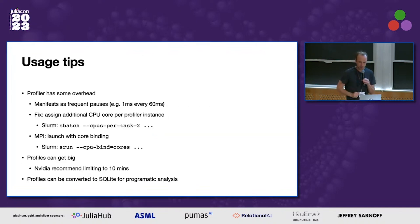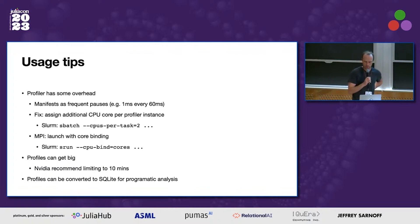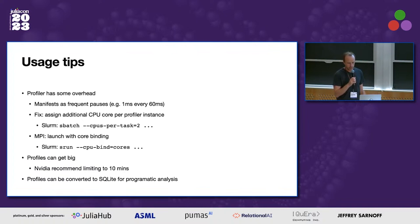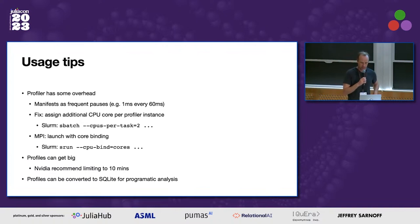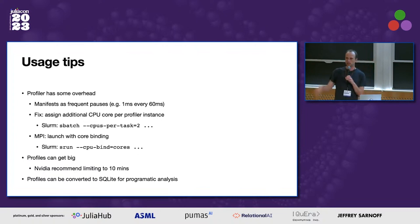Some minor usage tips. The profiler does have some overhead itself, which tends to appear as frequent pauses — about one millisecond every 60 milliseconds or so. The easy fix is to make sure you have an extra CPU core assigned for the profiler. If you're on a cluster, bind the cores to each task to ensure everything gets assigned nicely. The profiles can get very big, so don't run it for too long — NVIDIA say they only support up to 10 minutes, though it will go longer and just produce very large files. There's also a neat feature to export profiles to SQLite for further analysis.